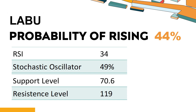Is LABU trading above or below its moving averages? LABU's 14-Day RSI value was 34. When the RSI is above 25 and below 50, it generally indicates that the stock is moderately bearish. This means that the security's price has been falling but has not yet reached oversold levels, typically considered an RSI reading of 25 or lower.